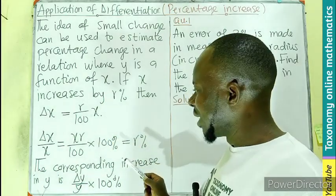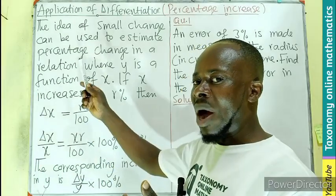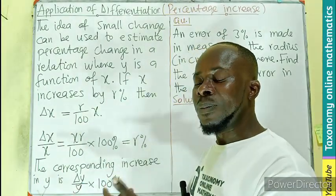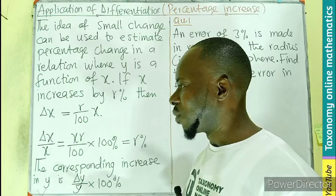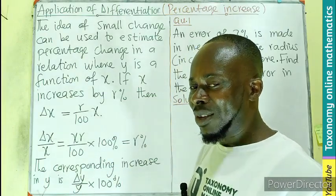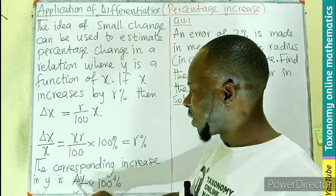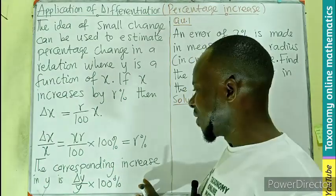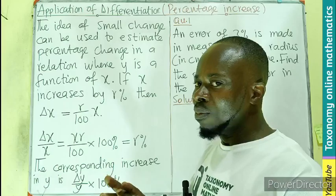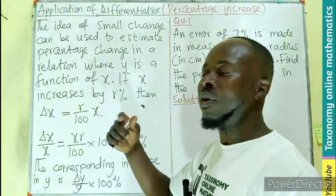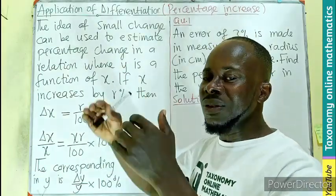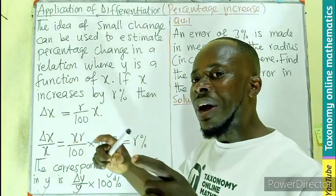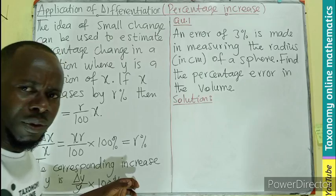Then the corresponding increase in y. Don't forget y is the dependent variable and x is the independent. So if I'm finding the change in the dependent, I have to have the corresponding change in the independent also. So y is also going to be the small change, delta y divided by y times 100 will give us the percentage in y also.